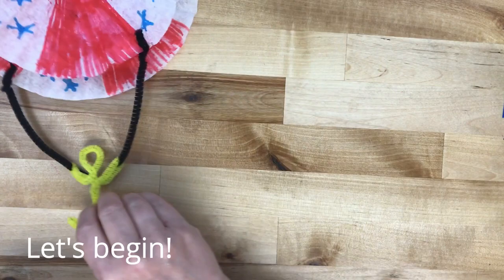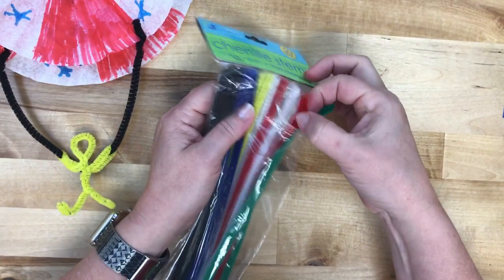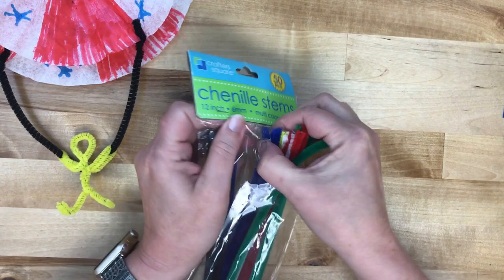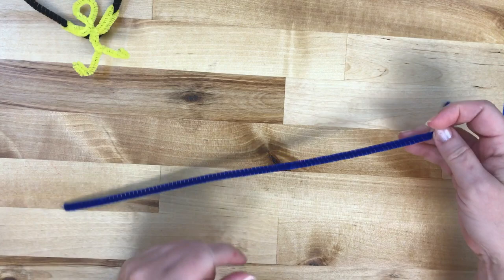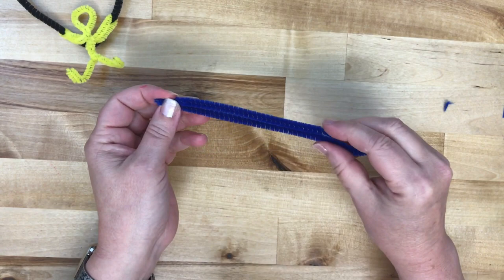Now for the stick figure, you just need one pipe cleaner. Kind of put him up there. What you want to do is fold it in half. Put a little twist up here for the head.